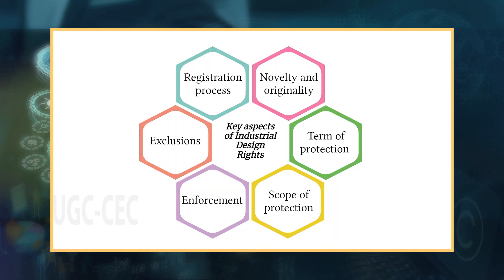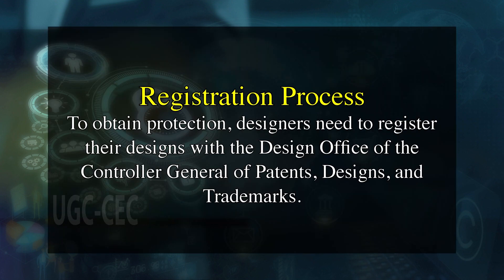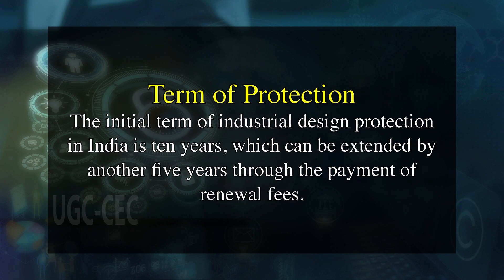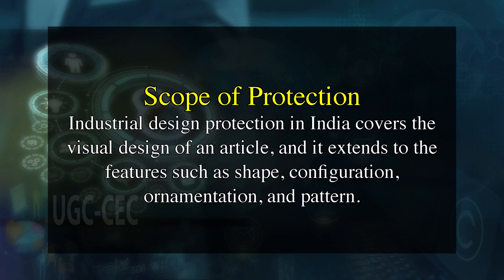In India, industrial design rights are governed by the Designs Act 2000. Key points include: 1. Registration process: To obtain protection, designers need to register their designs with the Design Office of the Controller General of Patents, Designs and Trademarks. The registration process involves submitting an application along with representations of the design. 2. Novelty and originality: A design must be novel and original and should not have been disclosed to the public anywhere in India or abroad before the filing date. 3. Term of protection: The initial term is 10 years, which can be extended by another 5 years through the payment of renewal fees. 4. Scope of protection: It covers visual design features such as shape, configuration, ornamentation and pattern, but does not protect the functional aspects of a design.